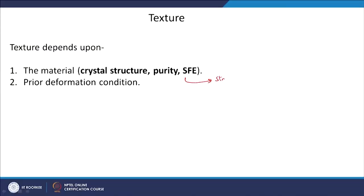If you see, the texture depends on the material — of course, in different types of material depending upon crystal structure, purity, and sometimes alloying elements also change material properties a lot, and therefore the development of texture. Stacking fault energy — SFE — is basically the stacking fault energy of the material. And of course, the prior deformation condition also affects texture development.